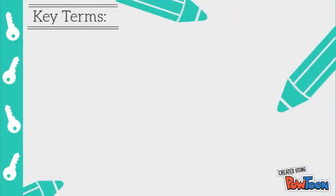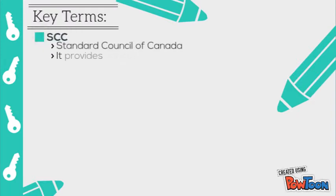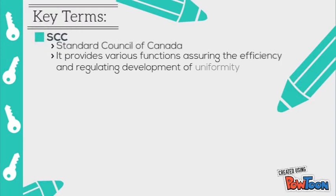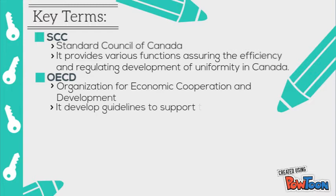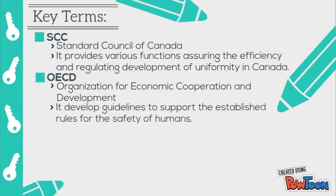These are the following key terms to be discussed in the video. SCC, Standard Council of Canada — it provides virus-assuring efficiency in regulating development uniformity in Canada. OECD, Organization for Economic Cooperation and Development — it develops guidelines to support the established rules for the safety of humans.